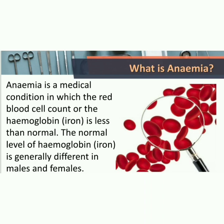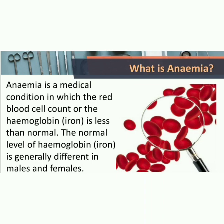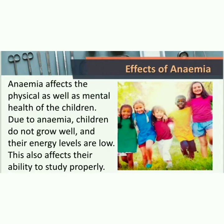What is anemia? Anemia is a medical condition in which the red blood cell count or the hemoglobin is less than normal. The normal level of hemoglobin or iron is generally different in males and females. Here you can see the difference between the count of red blood cells. In a normal person, the red blood cells are more, and in an anemic person, the red blood cells are less in number.